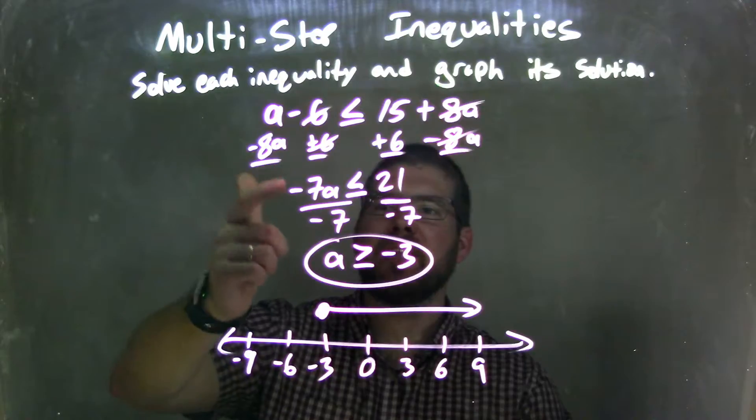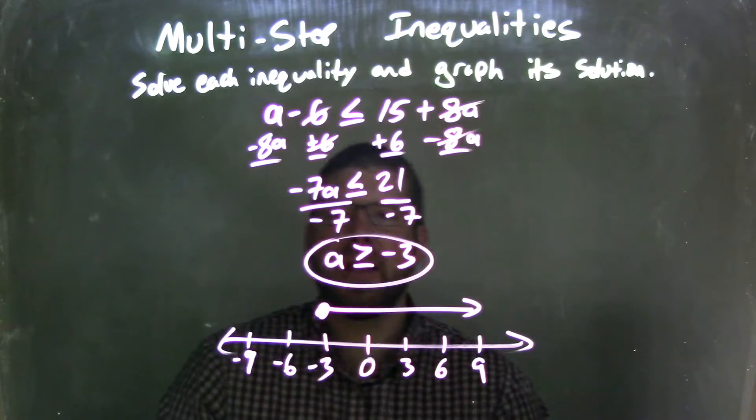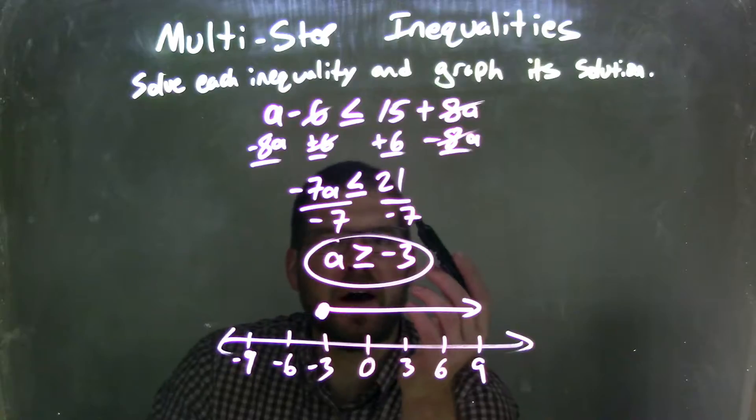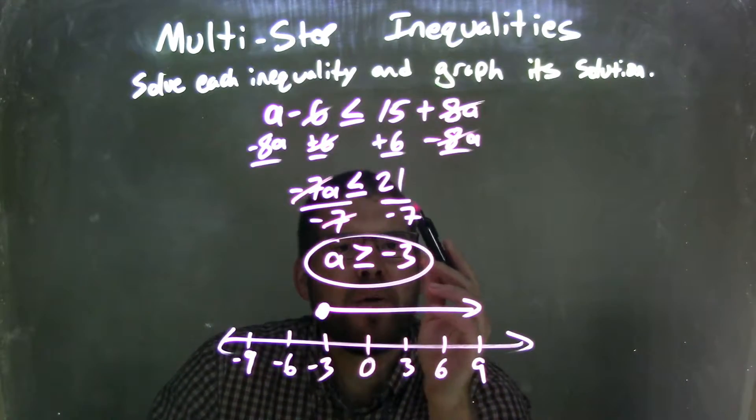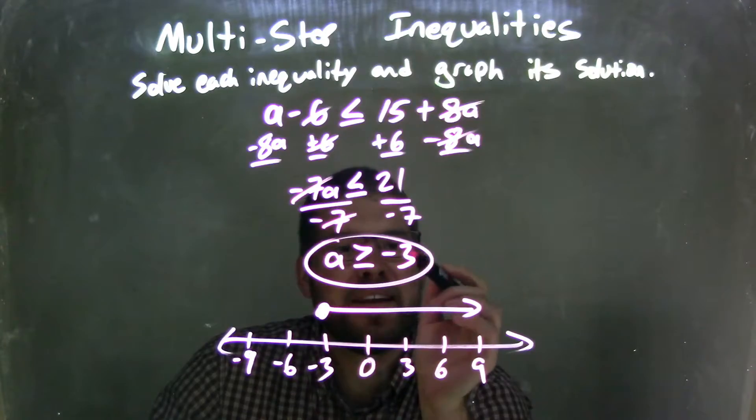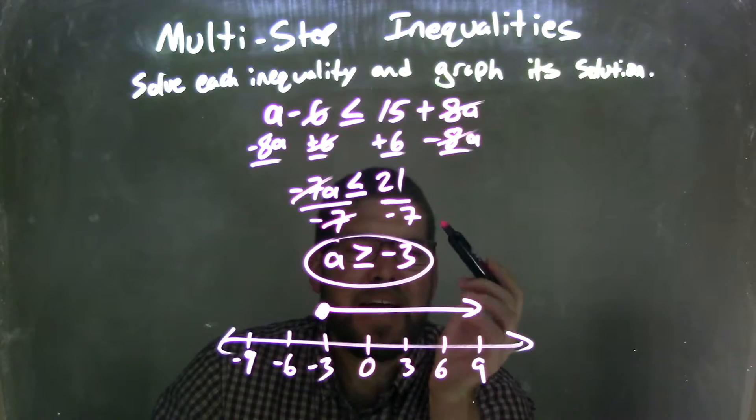a minus 8a is negative 7a, and 15 plus 6 is 21. And then divided by negative 7 on both sides, giving me a by itself on the left. And then 21 divided by negative 7 is negative 3. A positive divided by a negative is a negative.